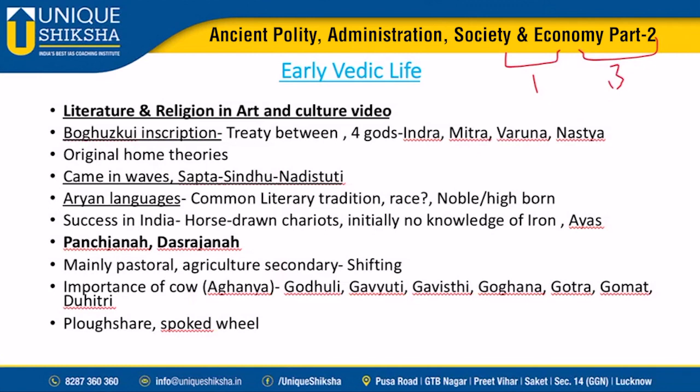One of the earliest references via inscriptional evidence of the Aryans is from the Boghaz Kui inscription as well as the Kassite inscription of the Middle East. There is a treaty between the Mitanni rulers and Hittite tribes mentioned. The important thing to remember is that four Vedic pantheon gods - Indra, Mitra, Varuna, and Nasatya - are mentioned in that particular inscription.